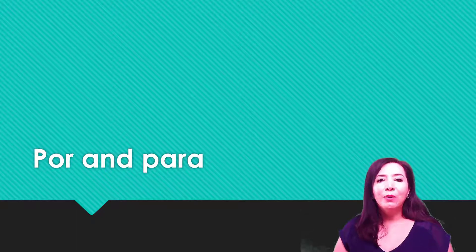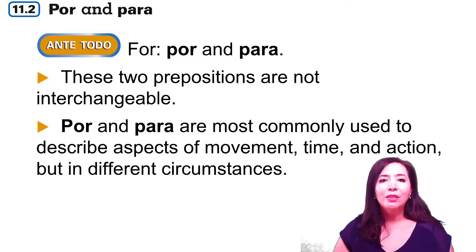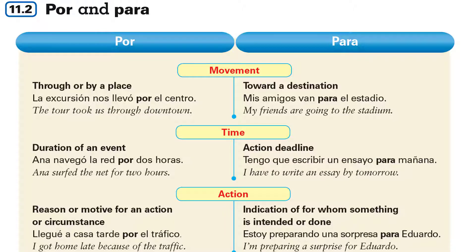Hola clase! Today we'll learn about por and para. As you know, por and para both mean 'for,' however we can't use them interchangeably. Here we have them side by side, and as you can tell, we use both of them — por and para — for movement, time, and action. Now let's dive in so I can tell you what the differences are and when exactly you need to use each one.